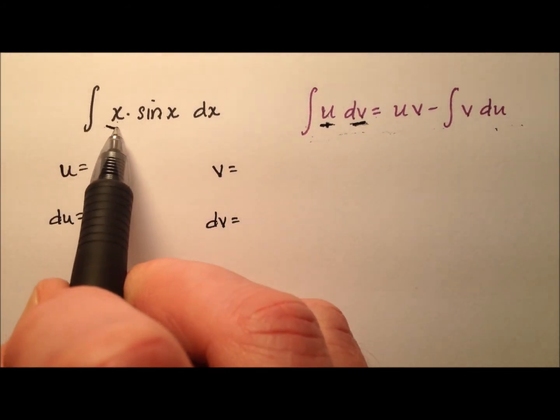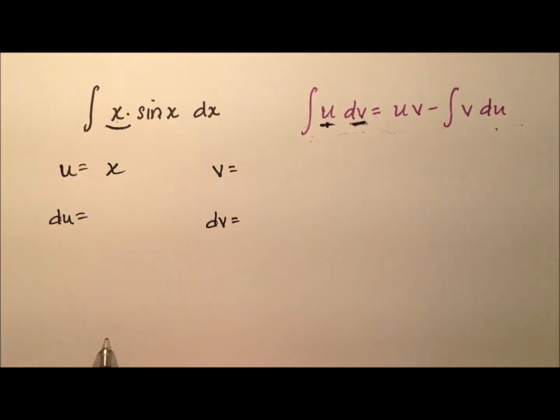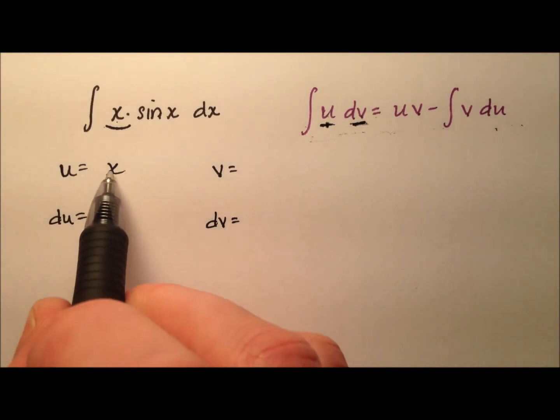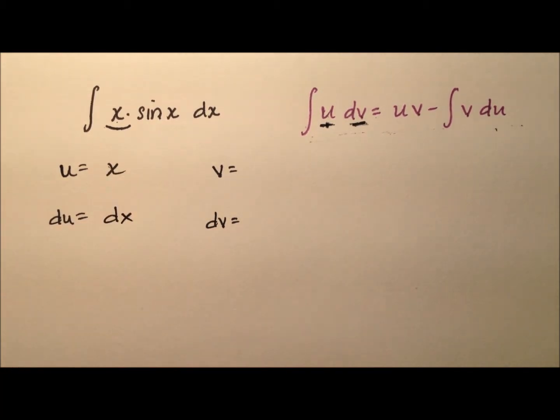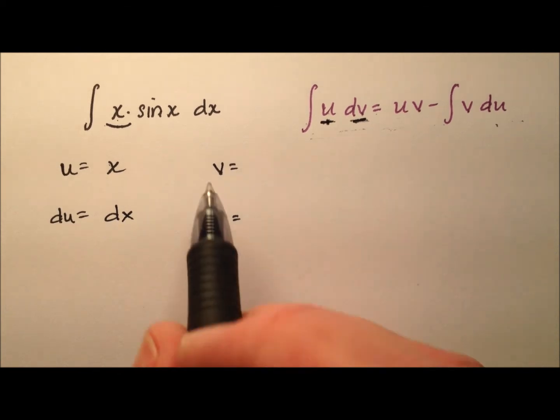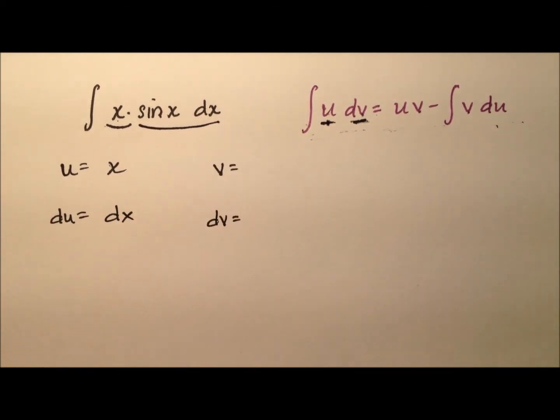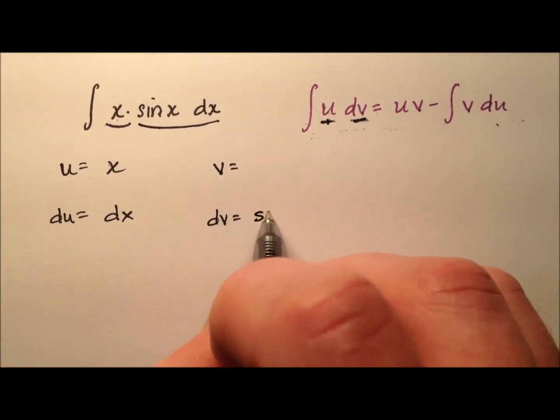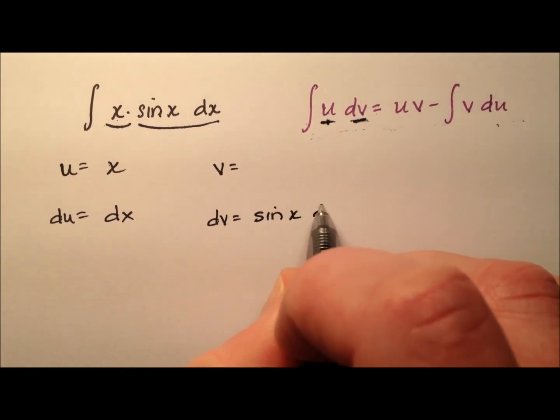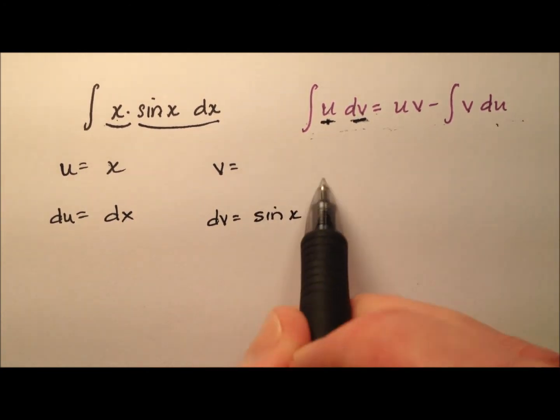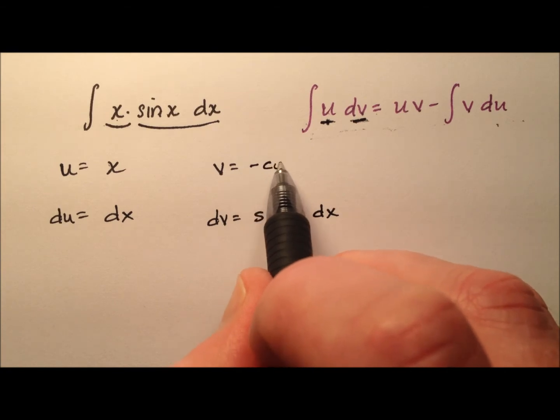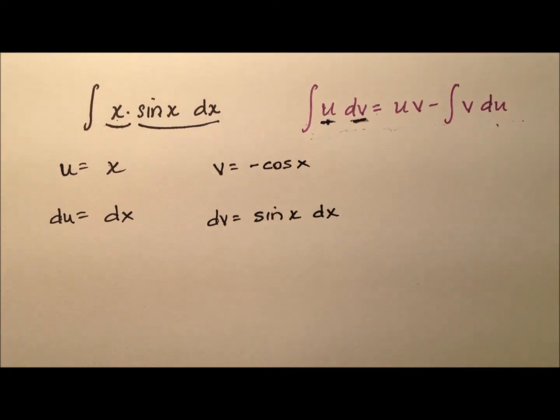Let's go ahead and maybe use x for our u because that will be nice to differentiate because the derivative of x is dx just the 1, and that means that the sine x dx is going to be our dv and so when I integrate that I get negative cosine x.